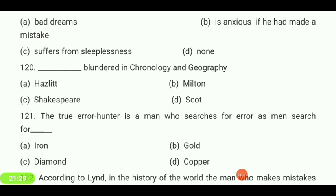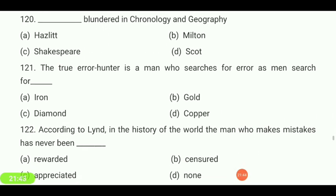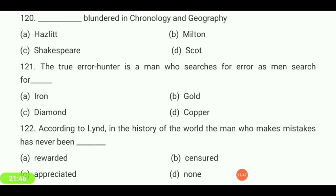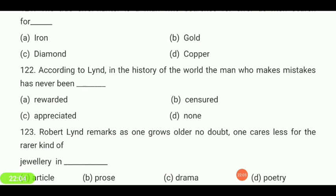According to Lind, there has been a heavy shower of letters in 'The Times' about the mistakes made by famous novelists. Why does Lind wake out of dreams at night and break into a sweat of fear? He is anxious if he had made a mistake — blundered in chronology and geography. In the history of the world, the man who makes mistakes has never been — rewarded, censored, appreciated, or none? Your answer is 'appreciated.'